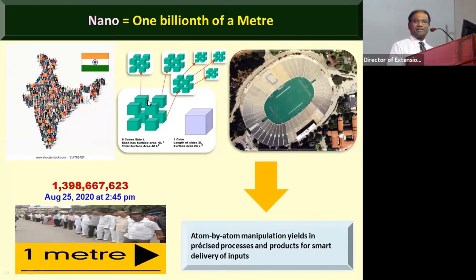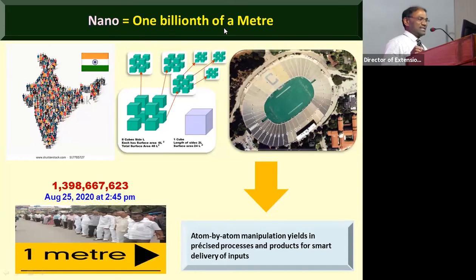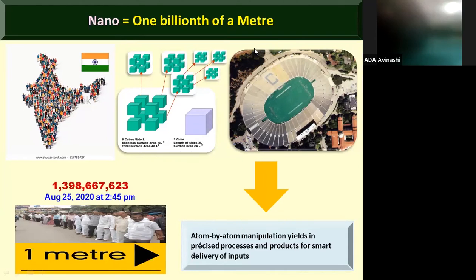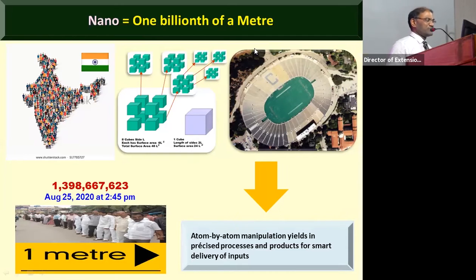Nano is one billionth of a meter — one in a hundred crore. When you perform size reduction you can increase the surface area enormously. A simple cube has six faces; when it undergoes division 24 times it becomes a nano-sized particle. At the macro scale it has roughly 120 square meters of surface area, but once divided 24 times you could spread that material across an entire football stadium. This is atom-by-atom manipulation — that is nanotechnology.